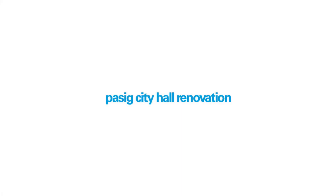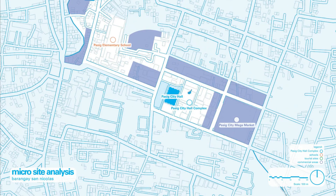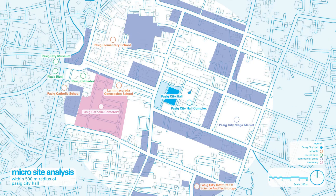Hello everyone, I'm Audrey Claircee and I am the last presenter of our group. As you already know, the four of us have different design concepts for the City Hall of Pasig, and mine is about Community Activation. Based on the site analysis of Barangay San Nicolas, Pasig City Hall is located in the City Hall complex. Its surroundings consist of the Pasig Mega Market, Pasig Elementary School, commercial areas, and a few residential areas. Within the City Hall's 500-meter radius, you can see more commercial areas, more schools, more residential areas, and a few tourist spots at the edge that create a busy and lively environment.